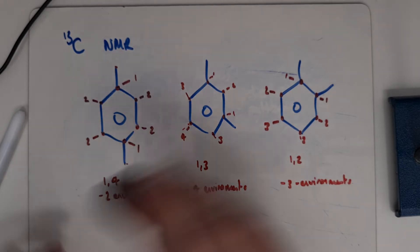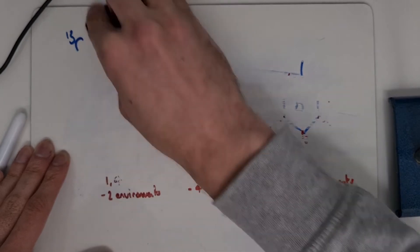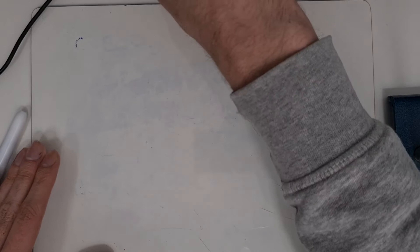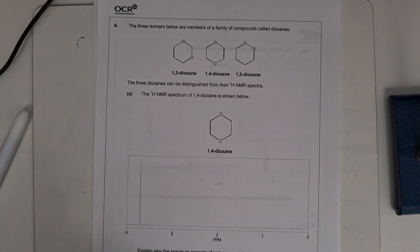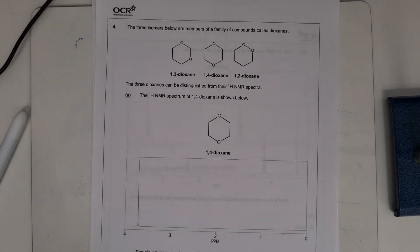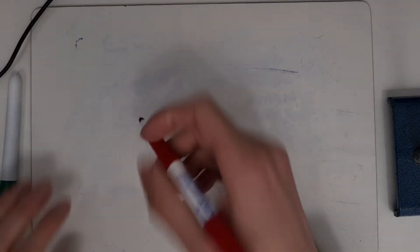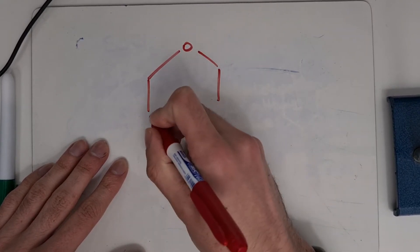In question 4 from the OCR practice booklet, it's a similar type of question but focuses on proton NMR specifically. We've got three isomers — all members of the family of compounds called dioxanes: 1,3-dioxane, 1,4-dioxane, and 1,2-dioxane. It gives us the proton NMR spectrum, first of all, of 1,4-dioxane.